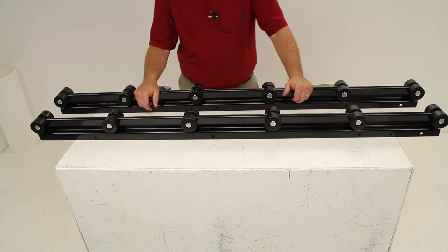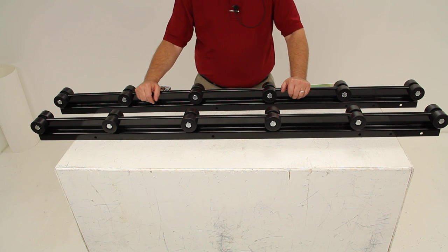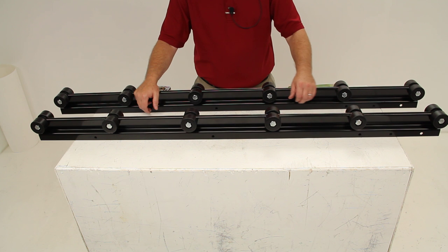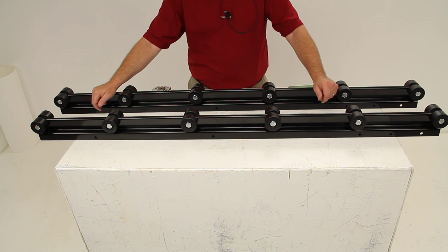Today we're going to review part number DL21755. This is the Dutton Lanson Boat Trailer Standard Roller Bunk in five foot long sections.